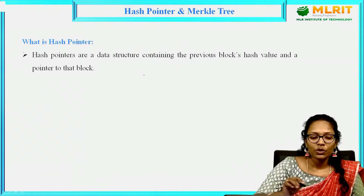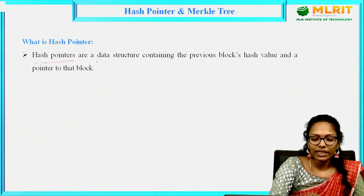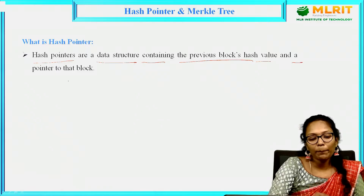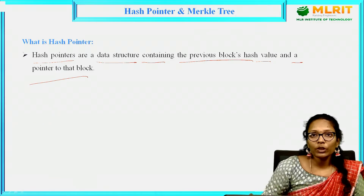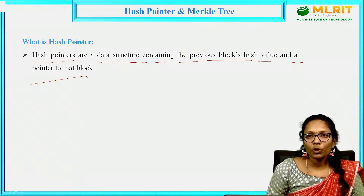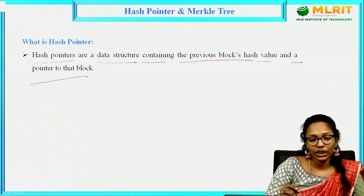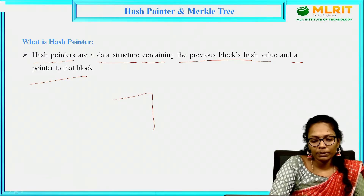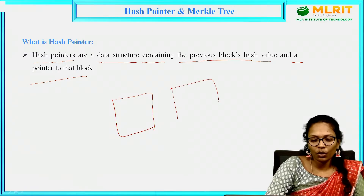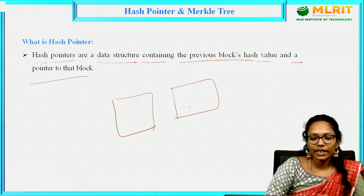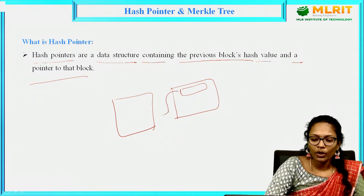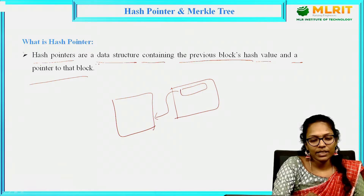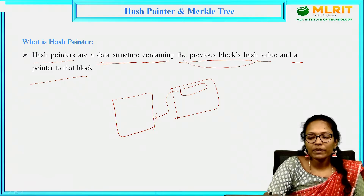What is a Hash Pointer? Hash Pointers are nothing but a data structure which contains the previous block hash value and a pointer to that block. We know blockchain is nothing but a collection of blocks, and all the blocks are connected together. All these blocks are connected together using this Hash Pointer only.